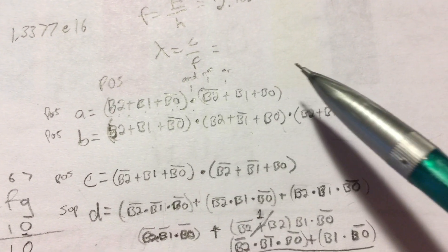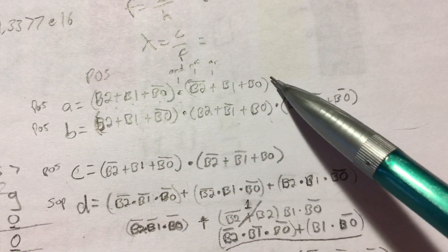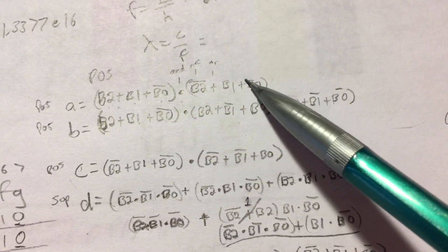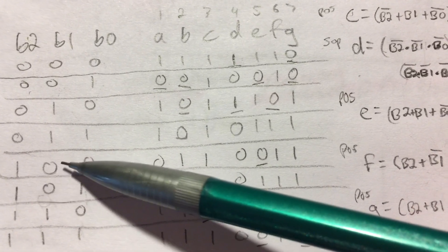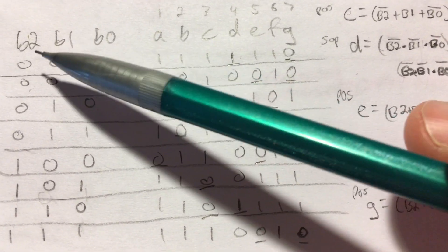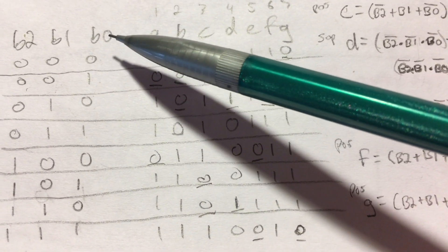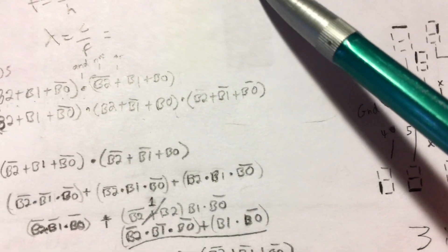And this is product of sums. One sum, two sum, product of those two sums, product of sums. And then we're going to map the second zero. We can see that it's 1, 0, 0, B2 inverted, B1, B0. B2 inverted, or B1, or B0.